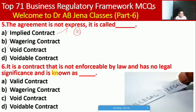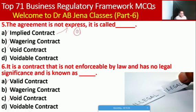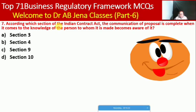Next MCQ: a contract that is not enforceable by law and has no legal significance is known as what? Whether valid contract, wagering contract, or void contract. Here C is the right option — void contract. Next MCQ: according to which section of the Indian Contract Act is the communication of a proposal complete when it comes to the knowledge of the person to whom it is made? Whether Section 3, Section 4, Section 9, or Section 10. Here B is the right option — Section 4.